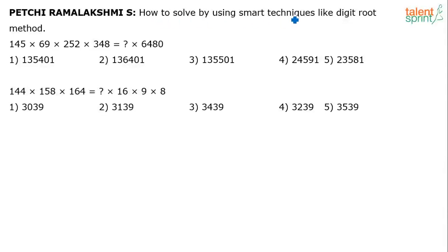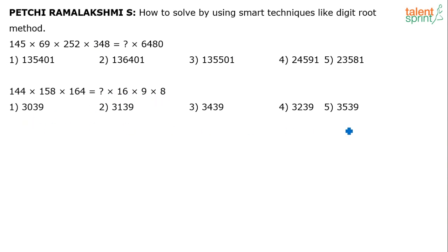How to solve by using smart techniques like the digit root method. The questions are on simplification. For example: 145 into 69 into 252 into 348 equals what into 6480? Similarly, 144 into 158 into 164 equals what into 16 into 9 into 8? Options have been given. You are supposed to find out what comes in place of the question mark in these two questions.